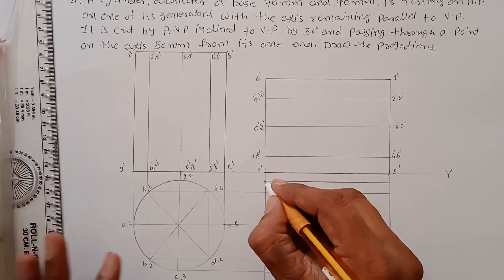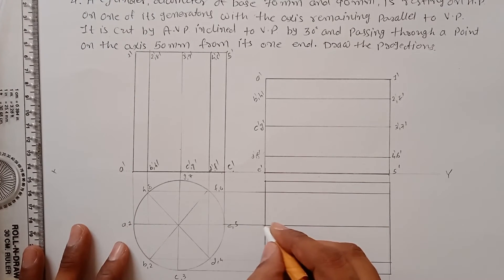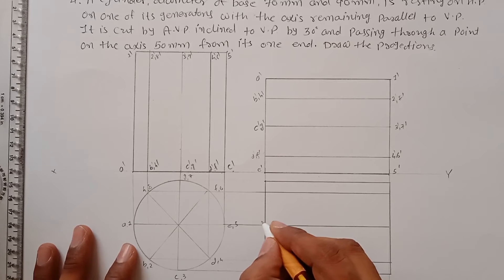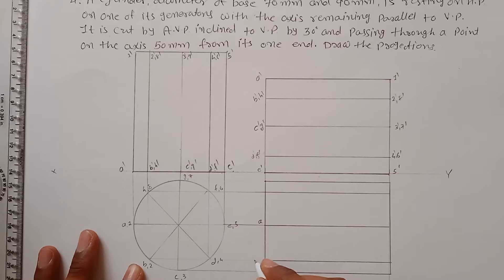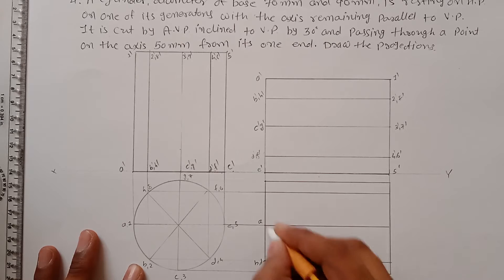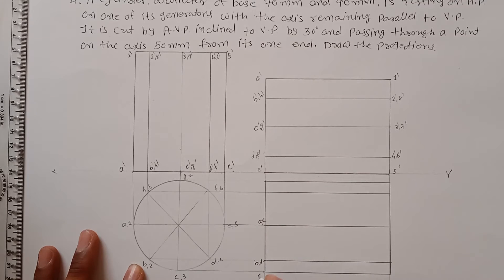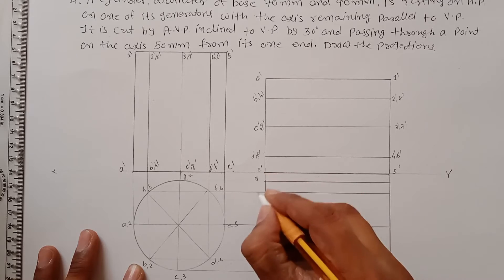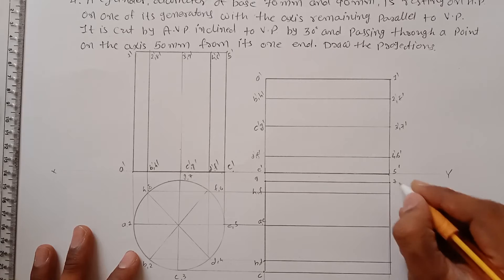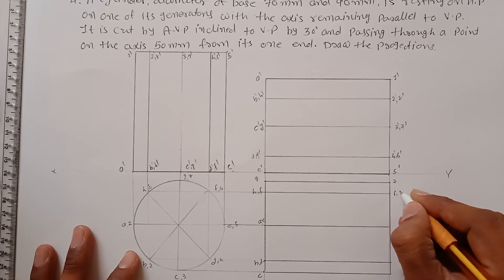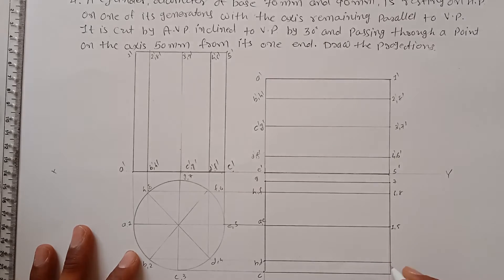Label the top view points. Starting from the top: point A, then B and D, then C and G, then H and F. Next, points 7, 6, 8, 1, and 5, followed by 2 and 4, and finally 3.